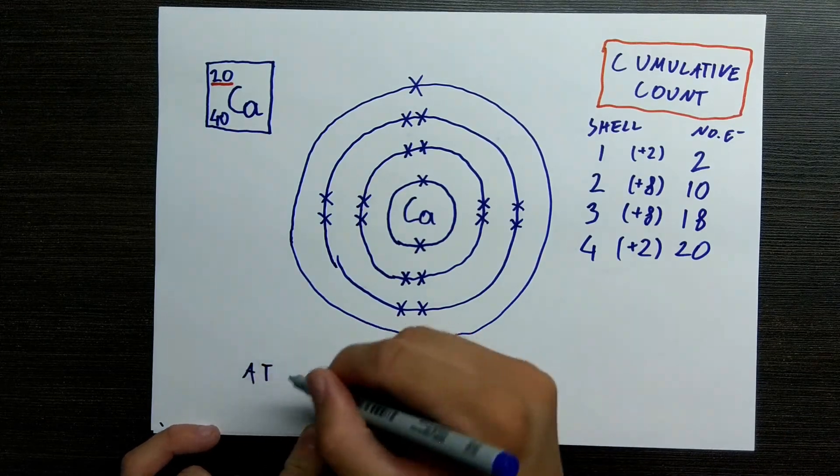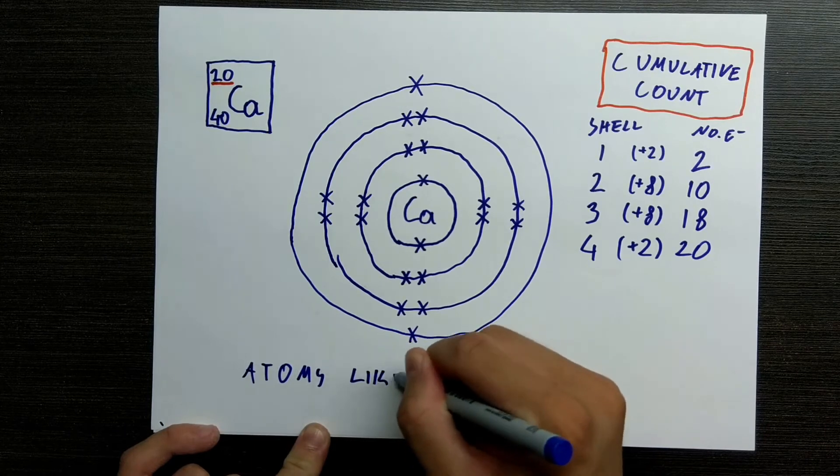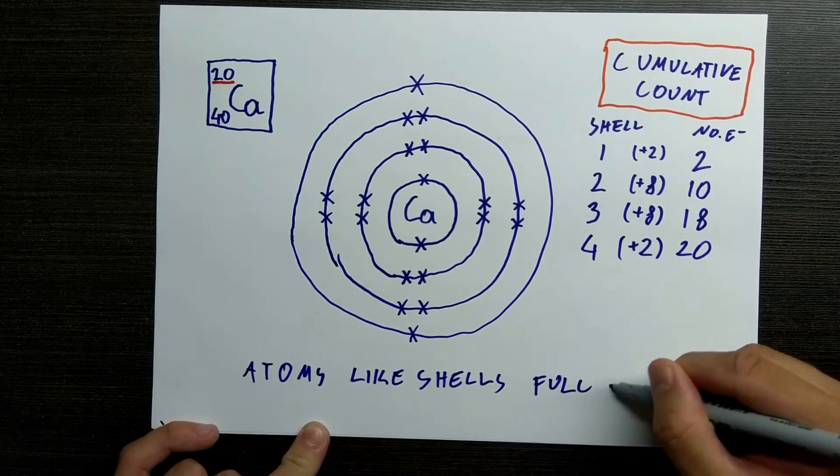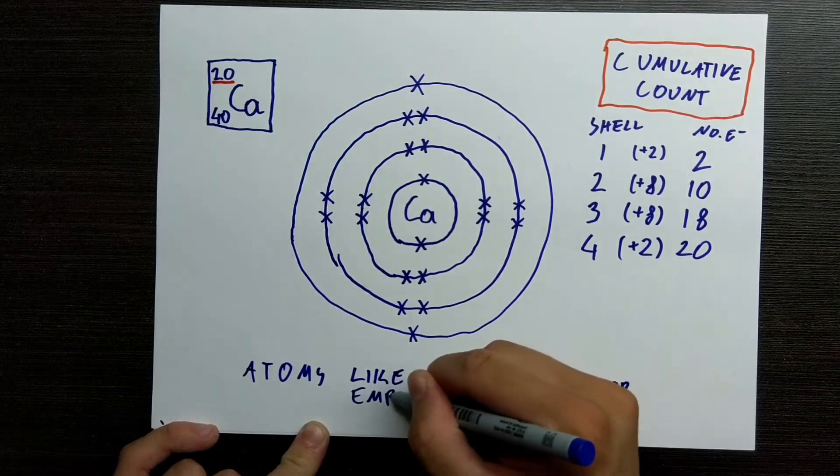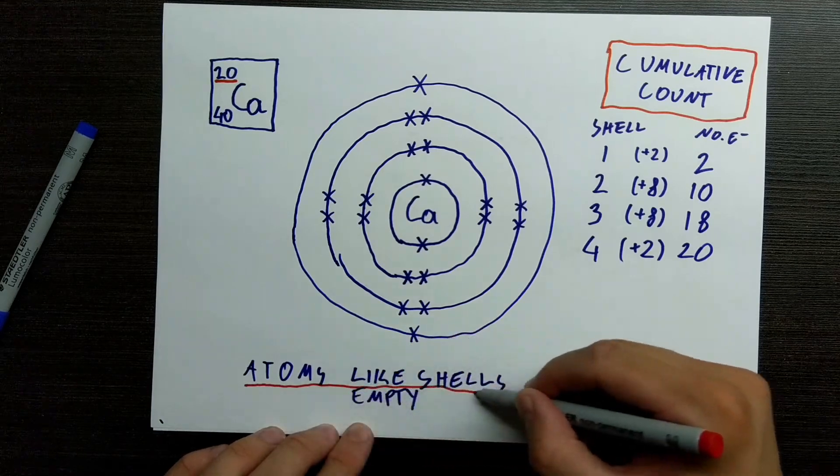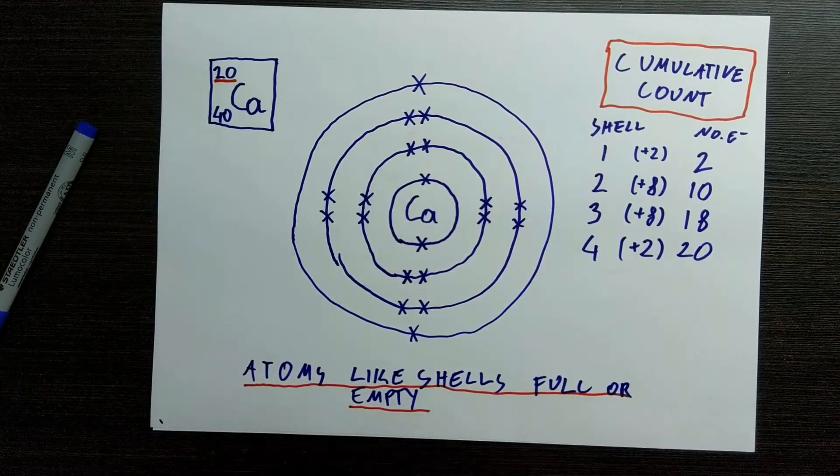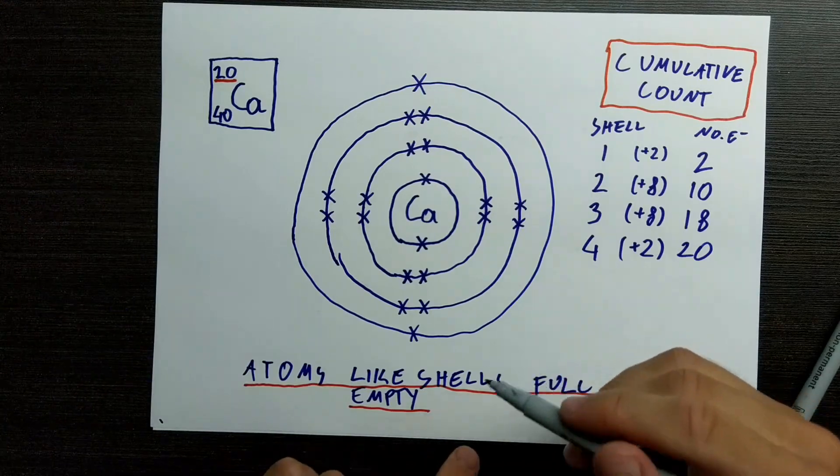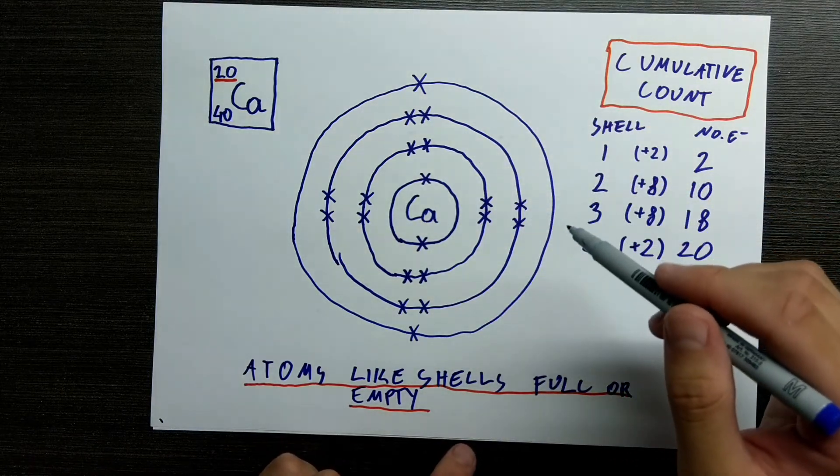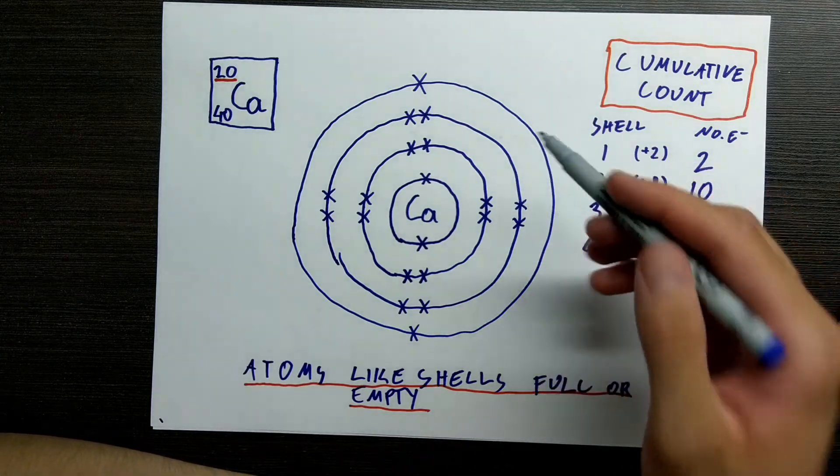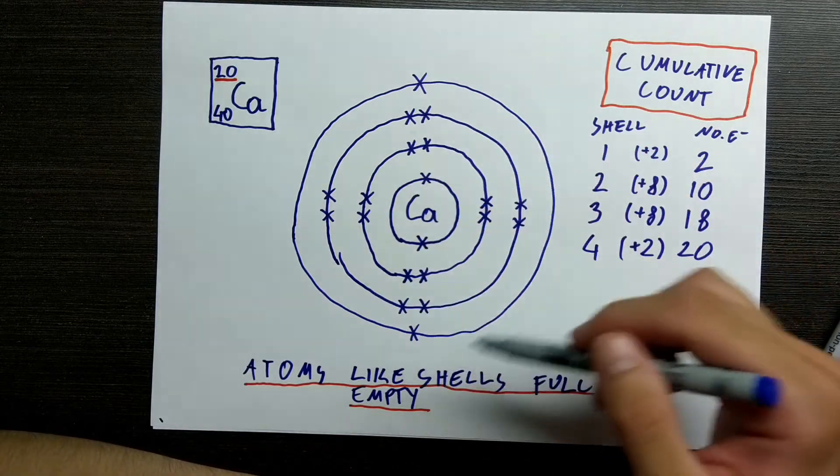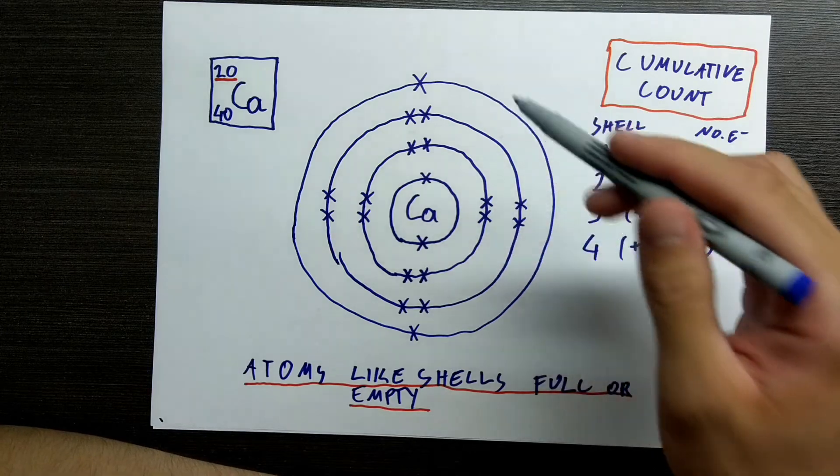The importance of this is that atoms like to have their shells either full or empty. This is very important because atoms react with each other to either fill up their shells or to empty their shells. And that's why reactions even happen in our world. And that also explains noble gases because noble gases already have a full outer shell. And that's why noble gases are so unreactive.